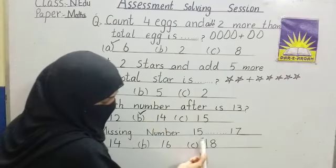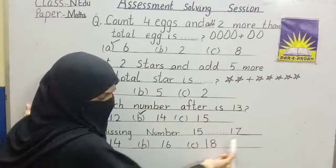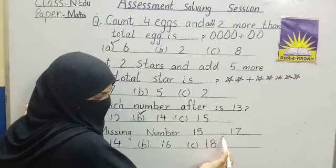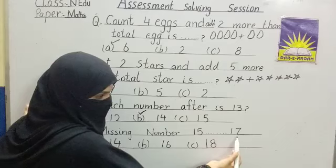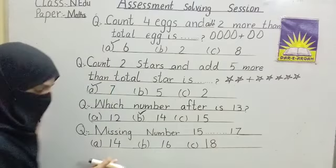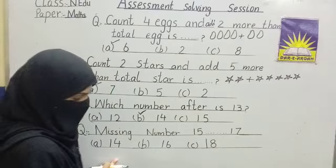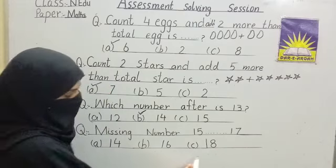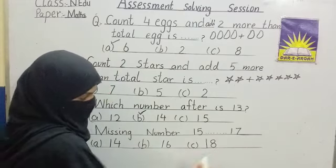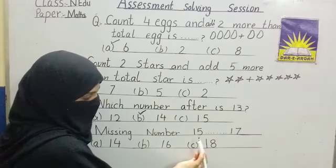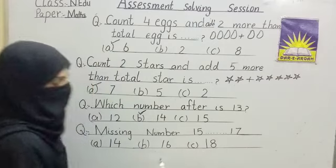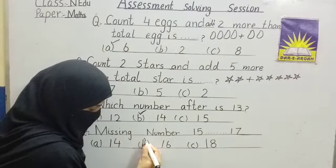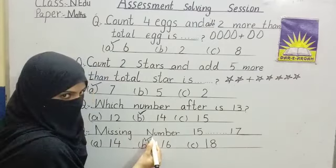Next question: fill in the missing number. The sequence is 15, ?, 17. Option A: 14. Option B: 16. Option C: 18. Count it — 15, 16. Yes, 16. Tick option B — sixteen.